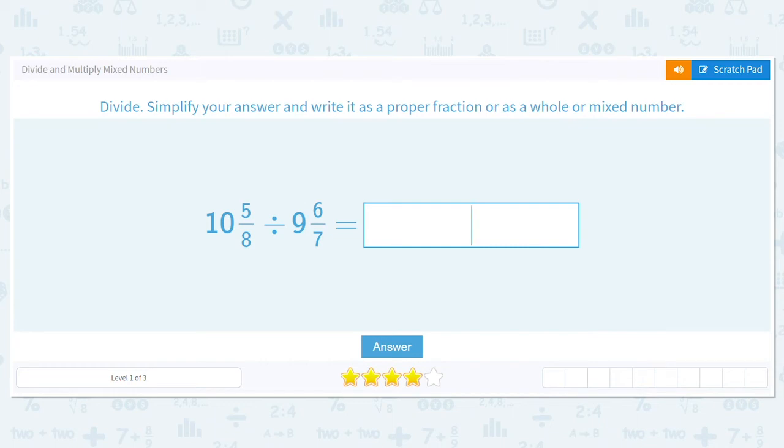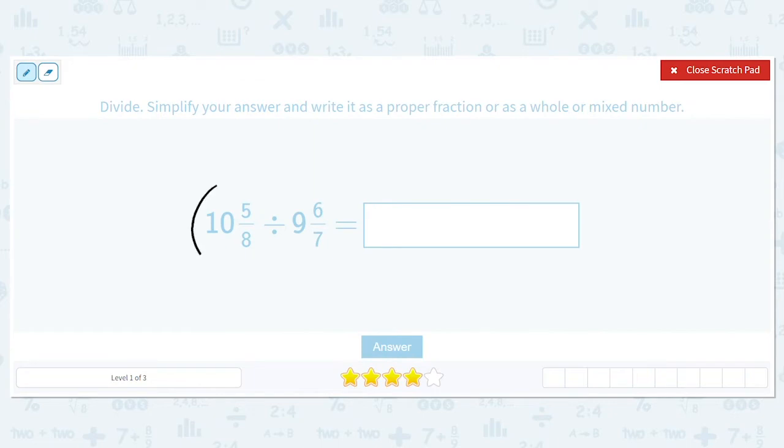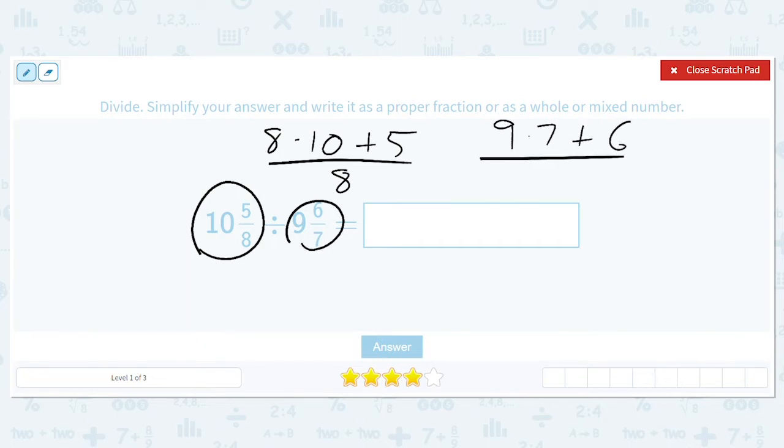Alright guys, let's dive into dividing and multiplying by mixed numbers. So what's the process? We've got 8 times 10 plus 5 divided by 8, and then we have 9 times 7 plus 6 divided by 7. That's 85 over 8.